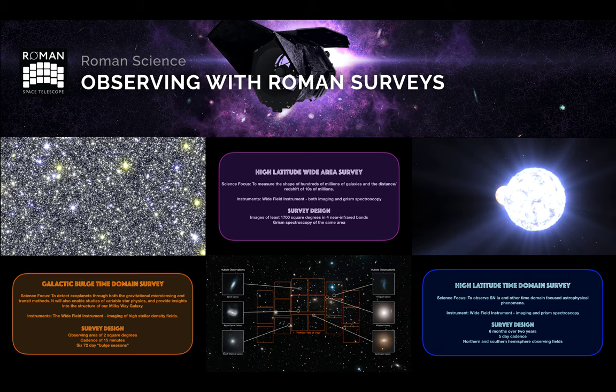The High Latitude Time Domain Survey consists of combined imaging and prism spectroscopy over a common survey region. There is likely to be an observing area in the northern and southern hemispheres with a cadence of five days and multiple tiers which focus on obtaining Type 1a supernovae at different red shifts.